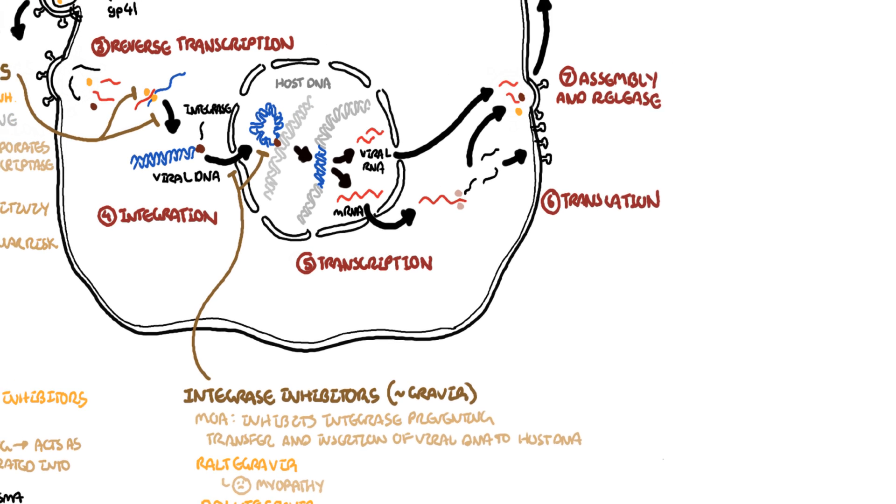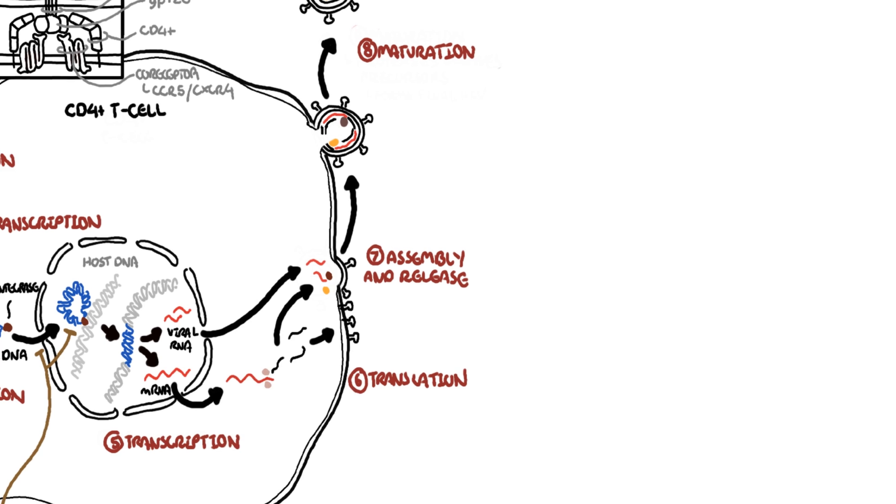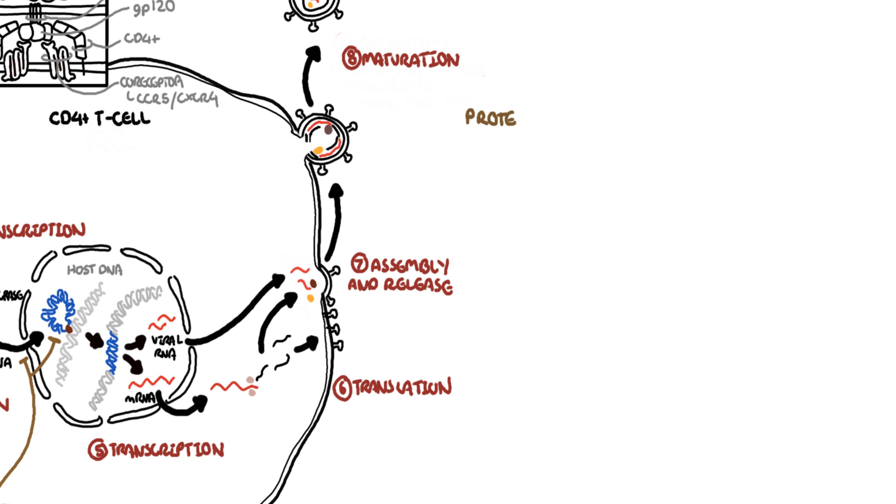The next antiretrovirals are the HIV protease inhibitors. The protease inhibitors usually end with navir and are designed to block the activity of the protease enzyme. Inhibition of the viral protease here causes the inability of the virus to cleave certain proteins, to activate certain proteins, and thus results in the generation of an immature, non-infectious HIV virus.